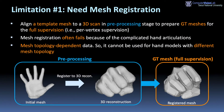Mesh registration means aligning a template mesh to a 3D scan in the pre-processing stage to prepare ground-truth meshes for full supervision. However, mesh registration often fails because of complicated hand articulations. Also, registered meshes are topology-dependent data, and therefore cannot be used for hand models with different mesh topology.